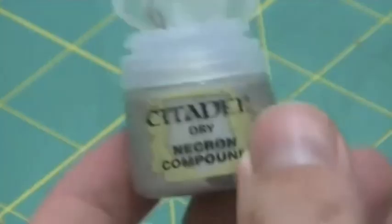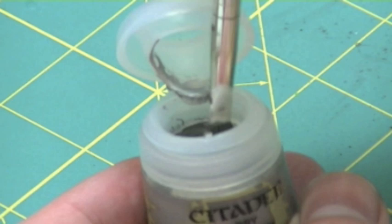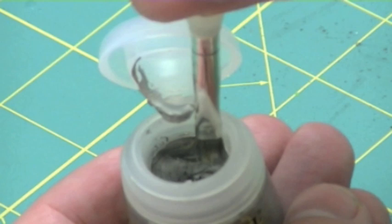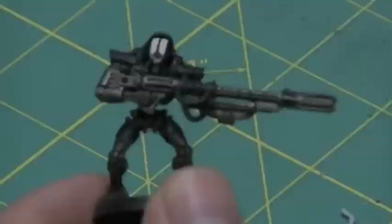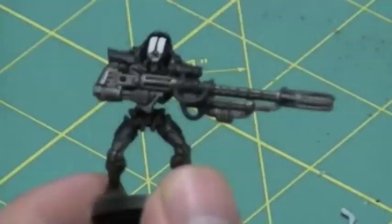So I opened up the bottle of Necron Compound and put the brush in. As you can see, the brush basically just kind of bounces against the top of it, and it is just really chock full of pigment. In fact, just by touching my brush against the paint, it filled the brush full of pigment, so I had to literally brush a lot of it off against a paper towel.